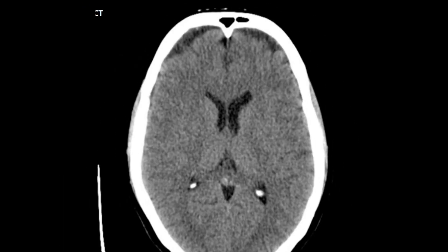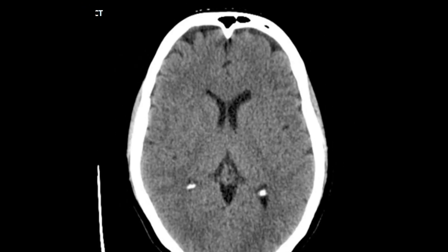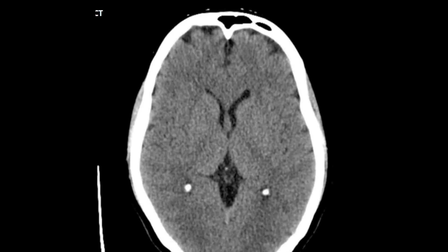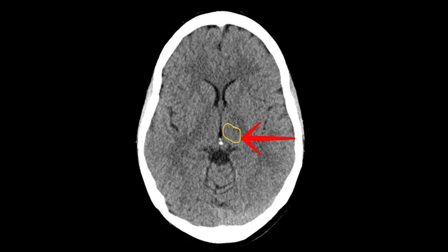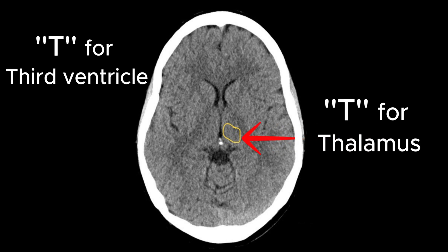Now to visualize the thalamus, let's scroll down at the level of the third ventricle. This here is the thalamus lying lateral to the third ventricle and posterior to the internal capsule. You can remember this as T4 — thalamus lying at the level of the third ventricle.